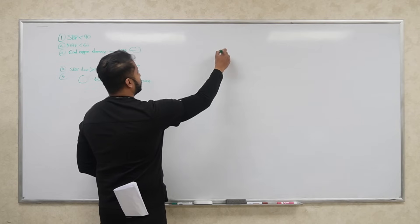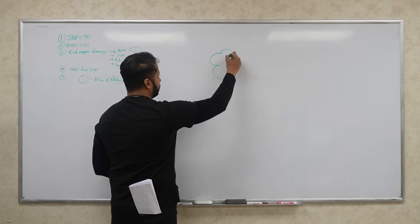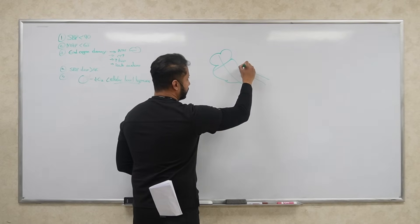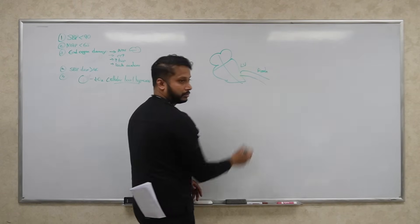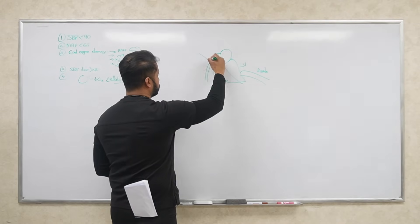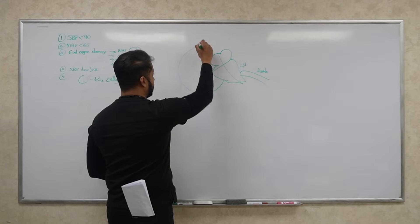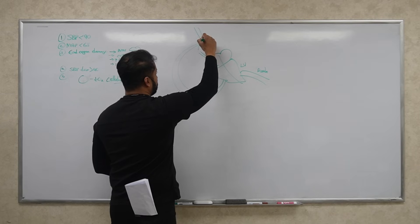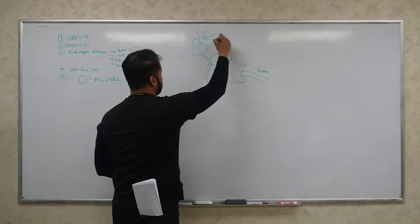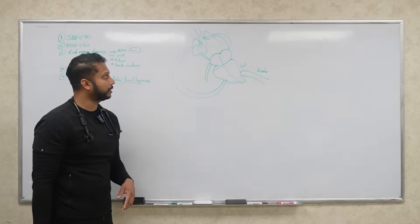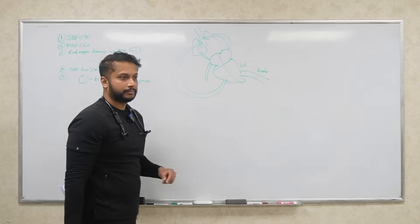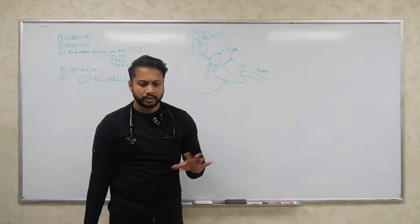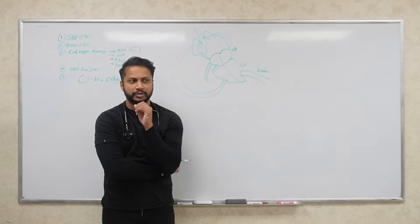Let me draw this out: here's the heart, the left ventricle pumping blood out through the aorta, your inferior and superior vena cava, the pulmonary artery supplying blood through the lungs, and pulmonary veins draining to the left atrium and left ventricle. Now let's talk about the types of shock.